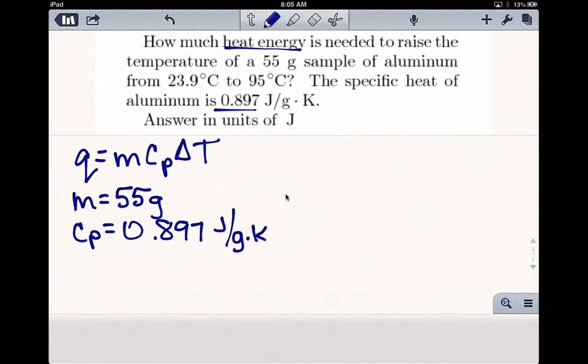And the delta T, we're just going to take the final, subtract the initial. So 95 minus 23.9, which is 71.1 degrees Celsius.